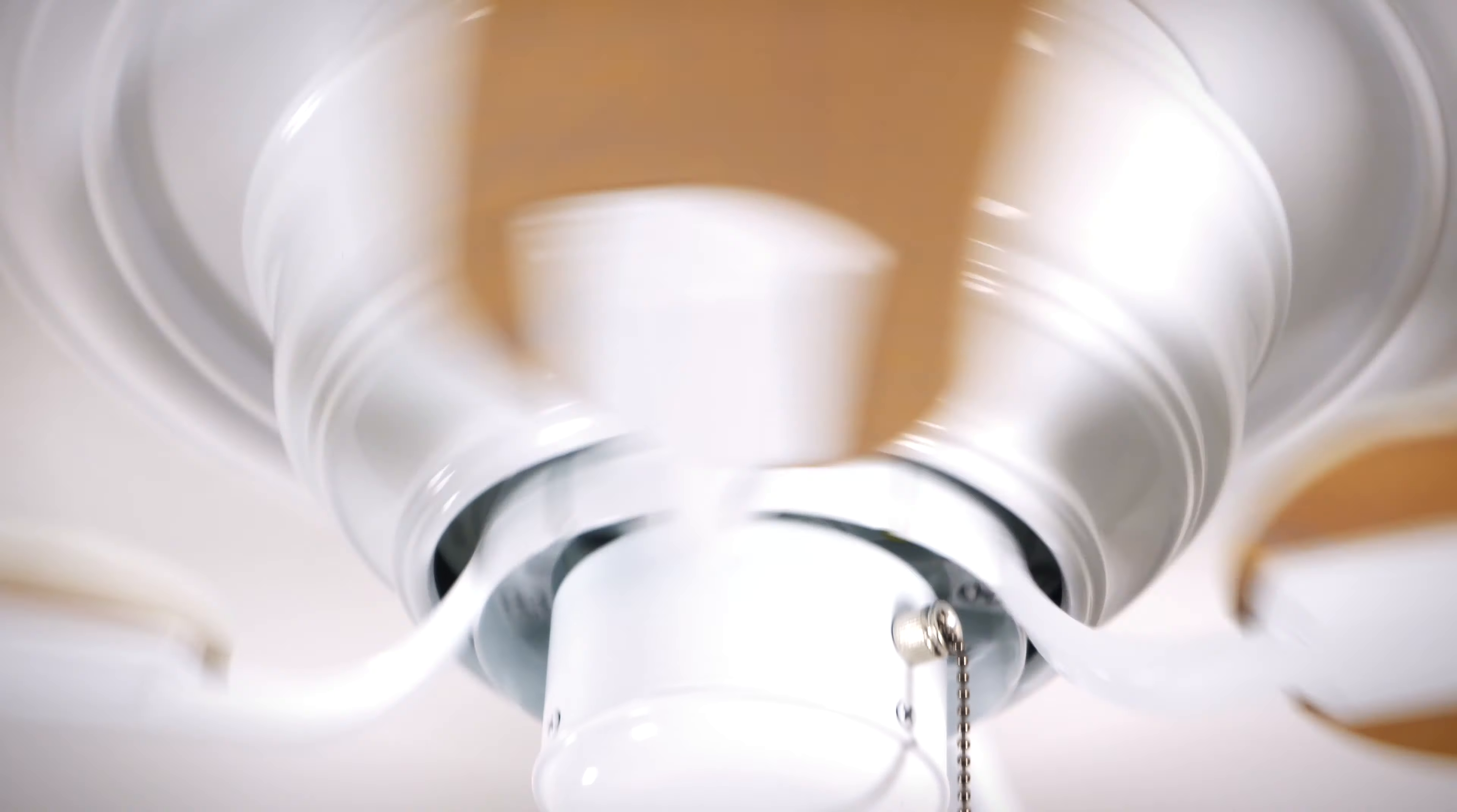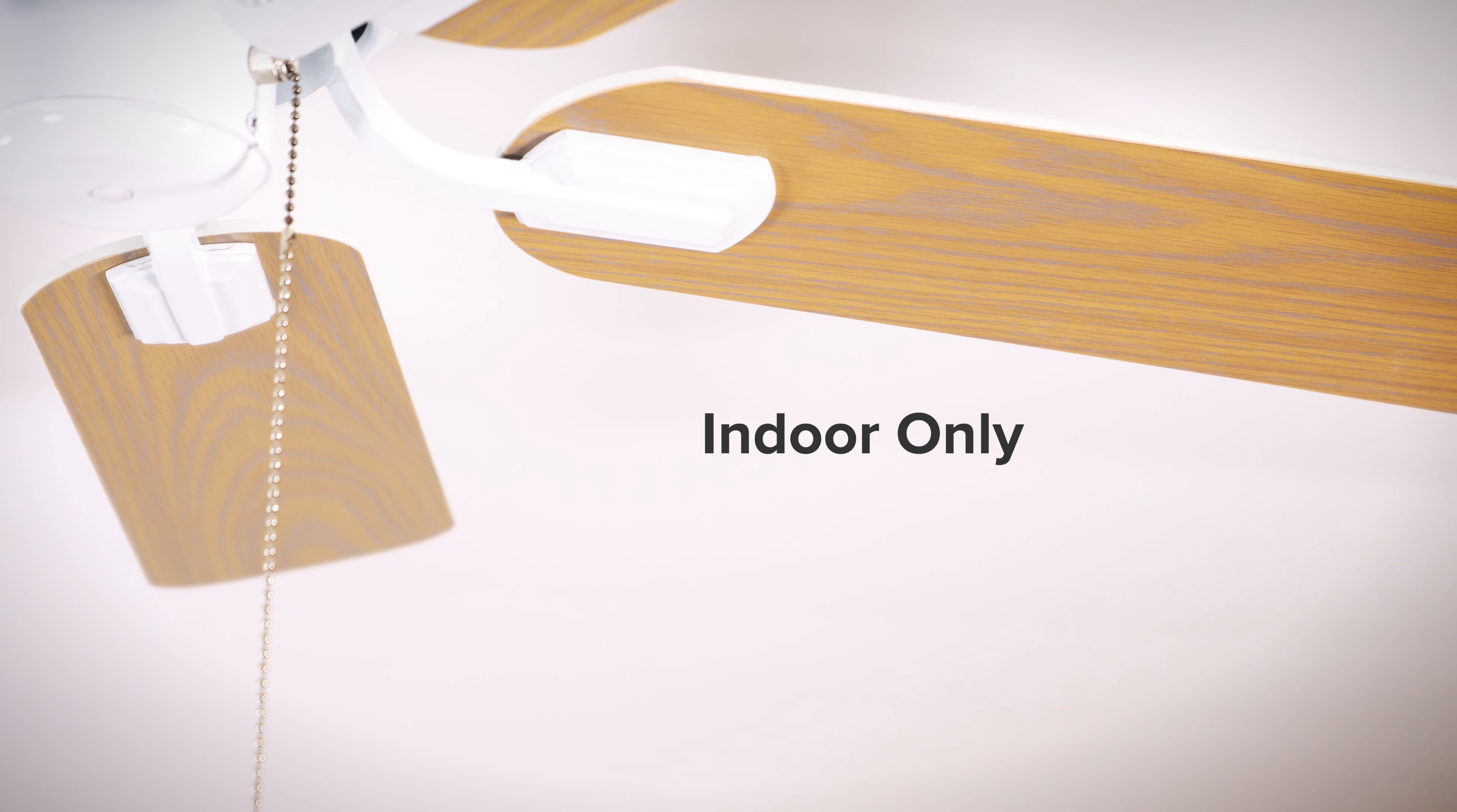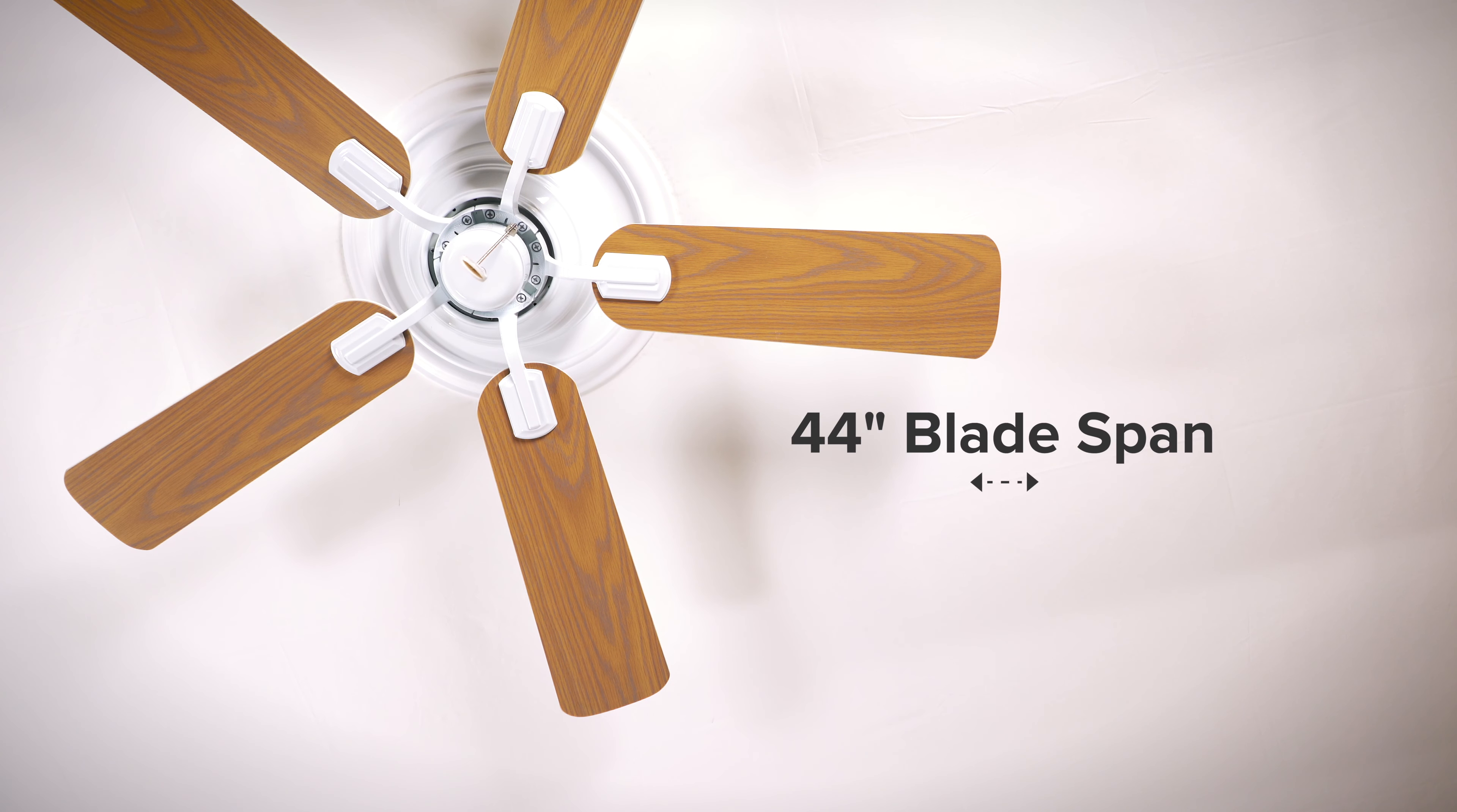The 44 inch Hawkins is a cottage style ceiling fan with a low profile design. The fan is rated for indoor use only and is pull chain operated. The 44 inch blade span is perfectly suited for small rooms that are 10 feet by 10 feet or smaller.